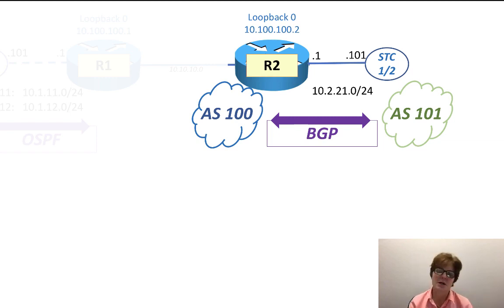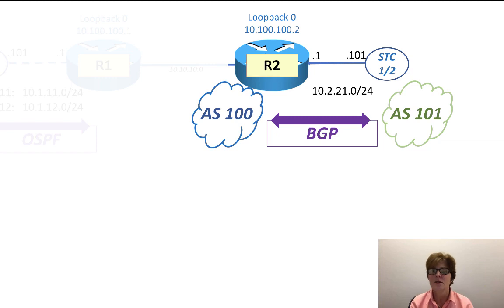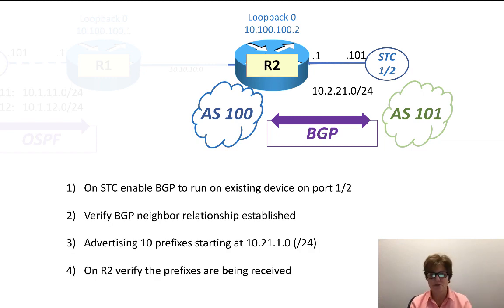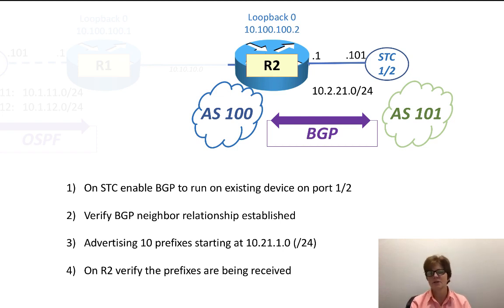I could have also done IBGP, and you can also do multiple IBGP peers. And while we're doing this with IPv4, it could have been VPNv4, could have been IPv6, etc. But this is just a default as to how to do this. So we're going to go to the Spirent Test Center and enable BGP to run on an existing device.